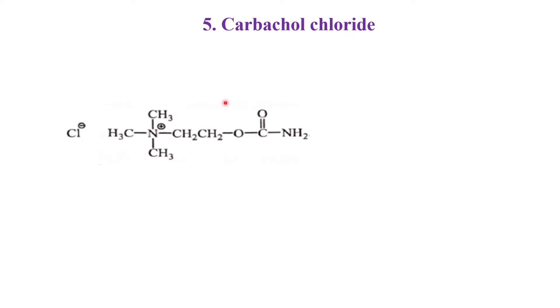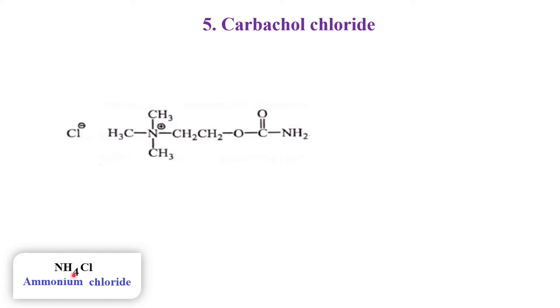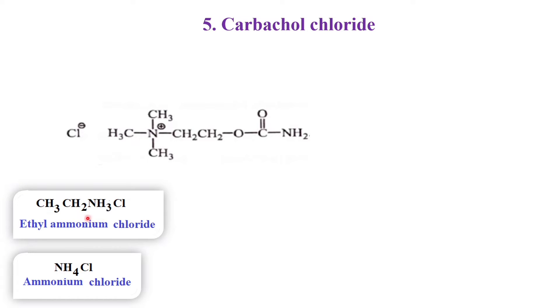In this class we are going to see the synthesis of carbachol chloride. First we'll see the structure of carbachol chloride. The parent is ammonium chloride — NH4Cl. One of those hydrogens is replaced by an ethyl group, giving ethyl ammonium chloride. In ethyl ammonium chloride, the first carbon has three hydrogens, and one of those is replaced by an aminocarbonyloxy group. In the NH3, the three hydrogens are replaced by three methyl groups.